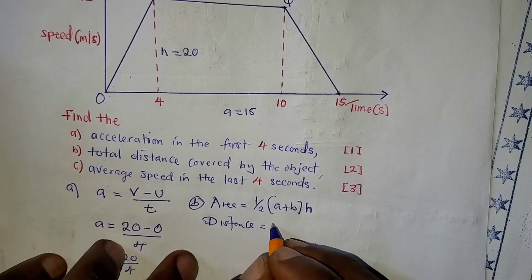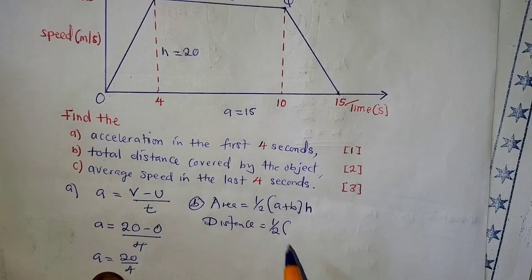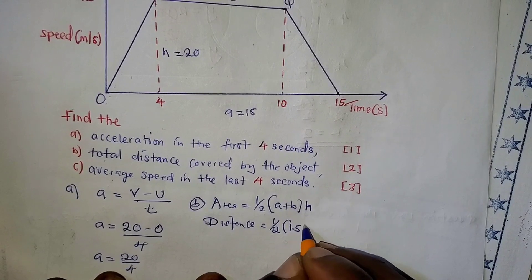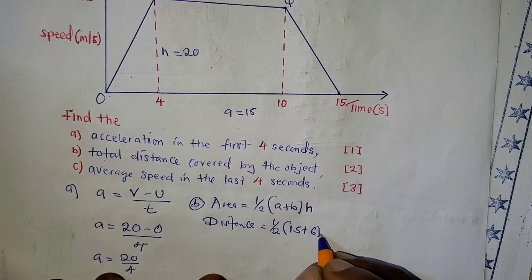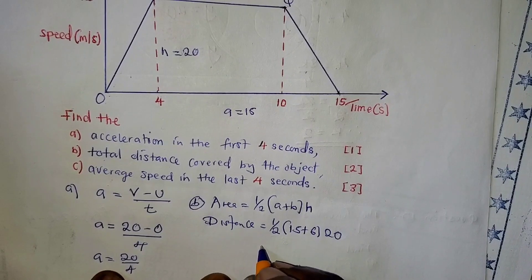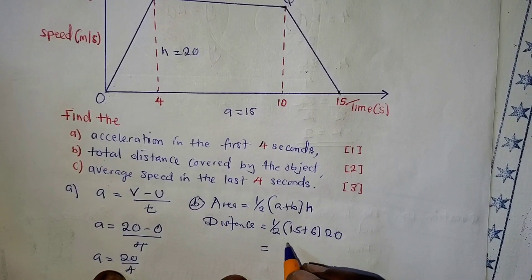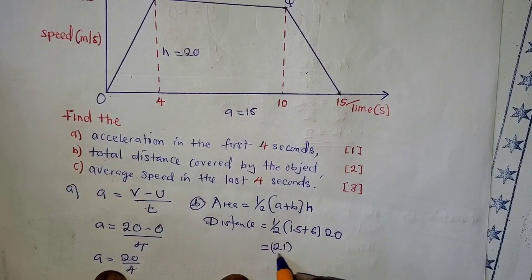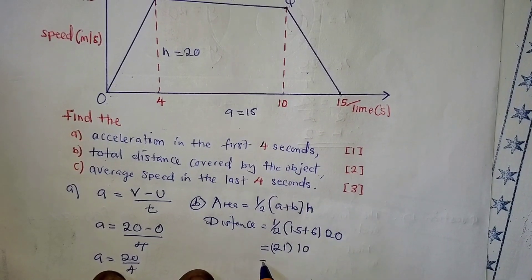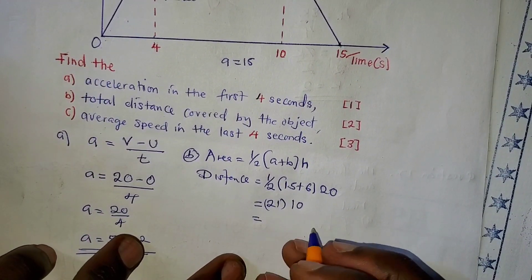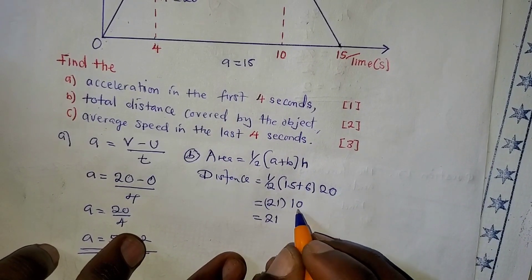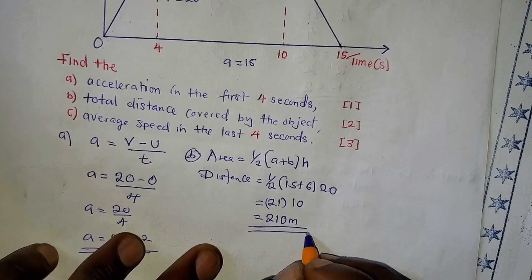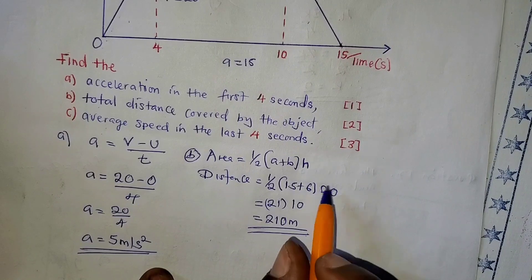Substituting into the formula: Distance = ½ × (15 + 6) × 20. Half of 20 is 10, and 15 + 6 = 21. So distance = 21 × 10 = 210 meters. That is the total distance. You can also verify this by finding the areas of the individual triangles and rectangle under the graph.